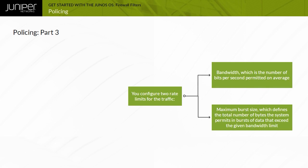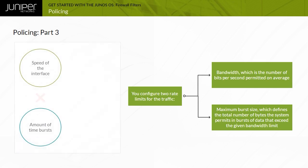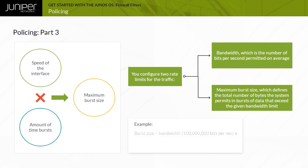The maximum burst size defines the total number of bytes permitted in bursts that exceed the bandwidth limit. The preferred method for determining maximum burst size is to multiply the interface speed by the amount of burst time you want to allow. For example, to permit bursts on a Fast Ethernet link for 5 milliseconds, this calculation yields a burst size of 500,000 bits, or 62,500 bytes when divided by 8.